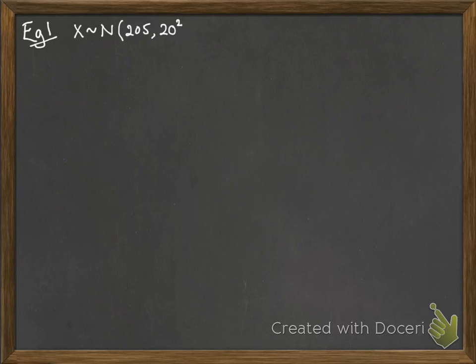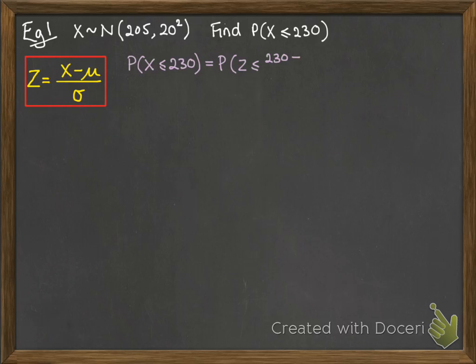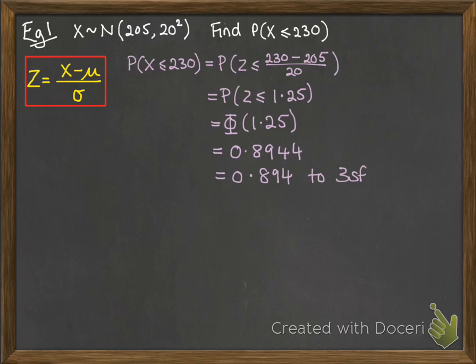Let's see how this really works. So using the same distribution, we're going to find the probability that x is less than or equal to 230. So using that transformation, we're going to take that 230 and change it into something that's equivalent on the z curve. So we'll take off the 205, divide by the 20. That gives us 1.25. So we're looking for phi of 1.25 because it's everything less than or equal to. Remember, the or equals to doesn't make a difference. You look that up on the normal distribution table and you get 0.894.